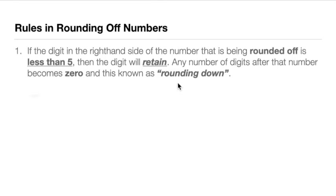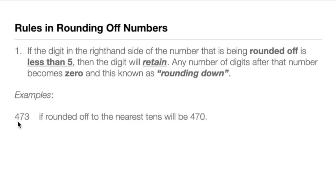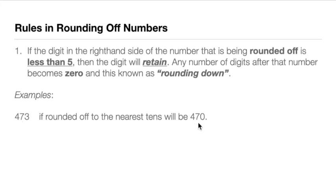For example, say we round off 473 to the nearest tens. The number to the right of the tens digit 7 is 3, and 3 is less than 5. So we retain the 7 and all digits after it become 0, giving us 470. We call this rounding down.